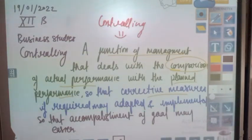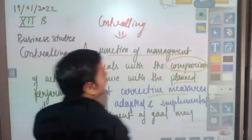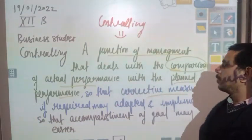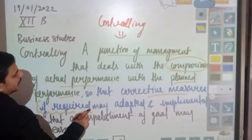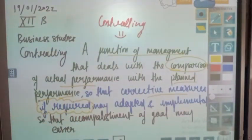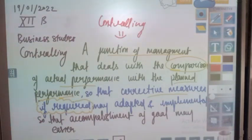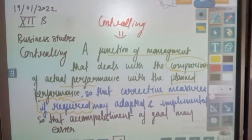The concept of controlling is very much clear: it is a process of comparing actual performance with the planned performance, so that corrective measures, if required, might be taken. Controlling is not always a function of interruption — corrective measures are taken only when there is a deviation between planned and actual performance, to ensure the accomplishment of the goal in an easier and smooth manner, maintaining satisfaction of both management and labor.